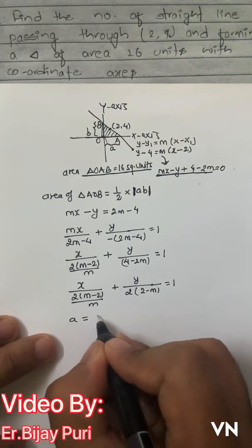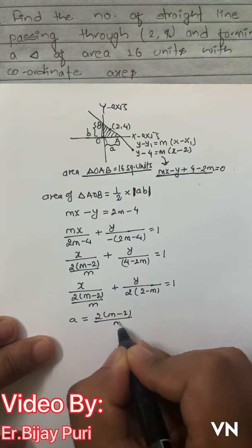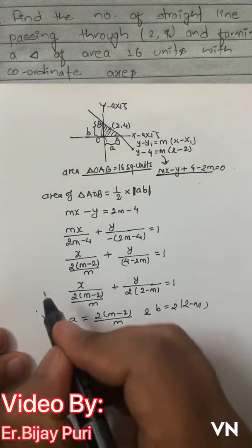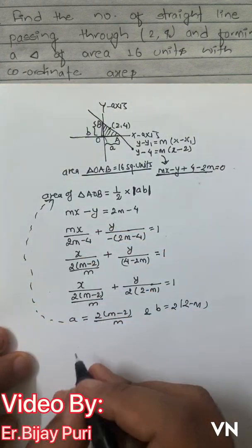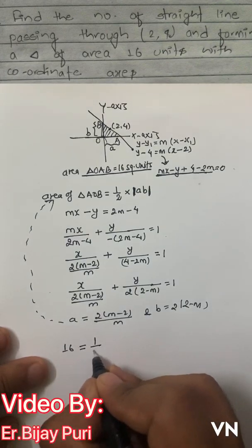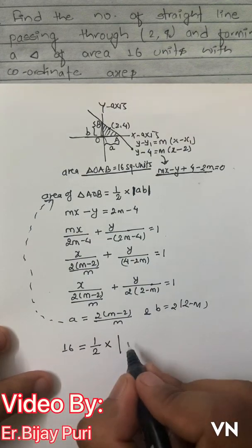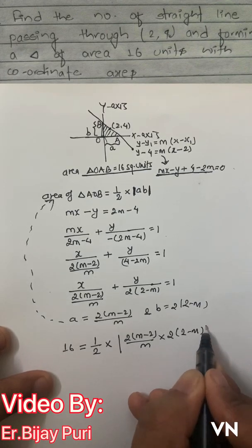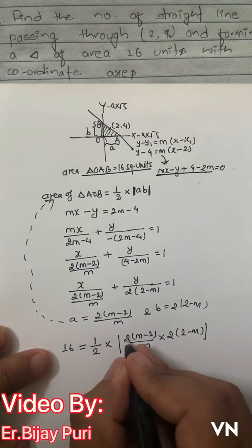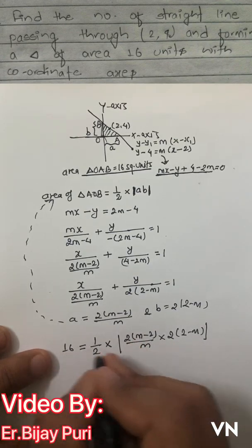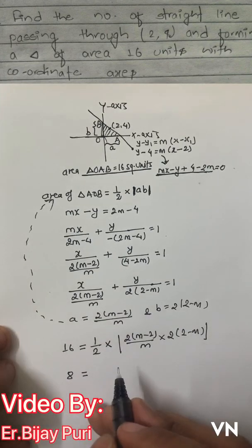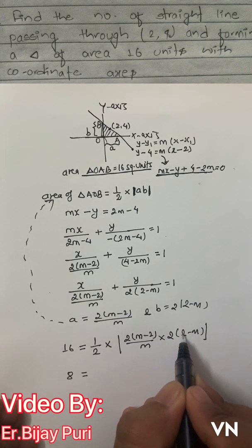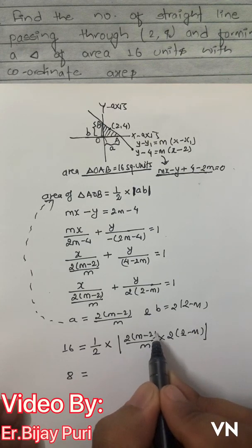From this, a = 2(m − 2)/m and b = 2(2 − m). If we put these values into the area expression: 16 = ½ × |2(m−2)/m × 2(2−m)|. Simplifying: 8 = |(m−2)(2−m)/m|. Notice that (2−m) = −(m−2), so taking −1 common gives (m−2)² in absolute value.